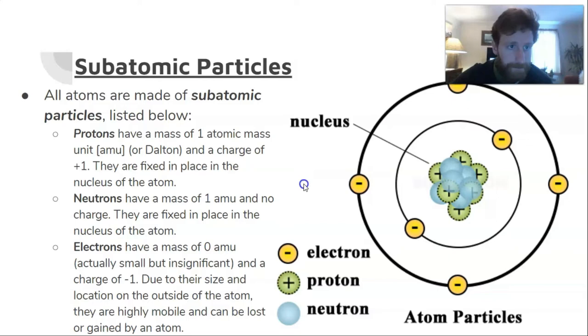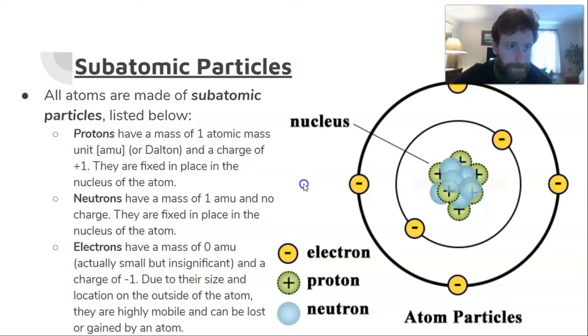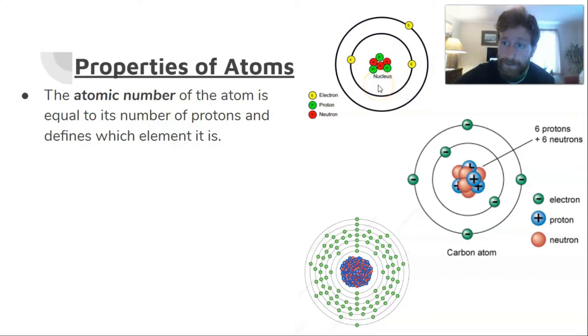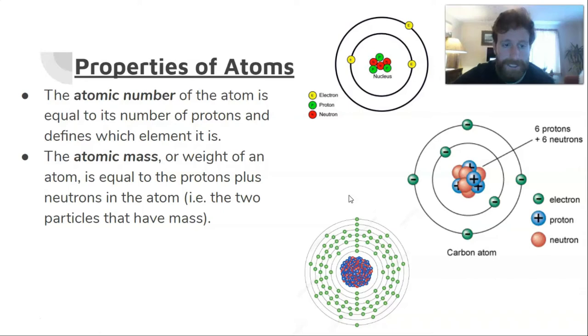We have some properties of atoms that we like to talk about. The first one is the atomic number. The atomic number of the atom is equal to the number of protons, and it determines the element. For example, this atom up here has three protons. I know that's lithium because if I look on a periodic table, a lithium atom has an atomic number of three, which means it has three protons. Carbon always has six protons. If it's not got six protons, then it's not carbon.